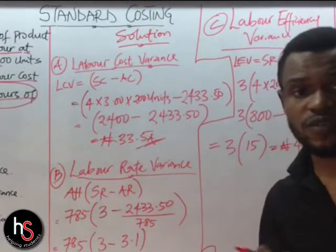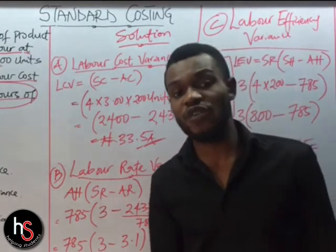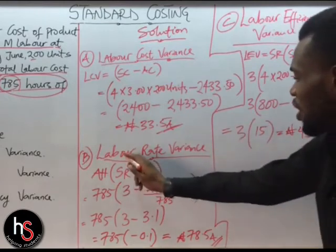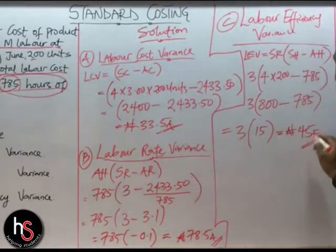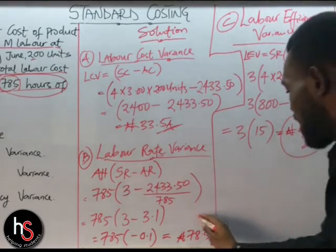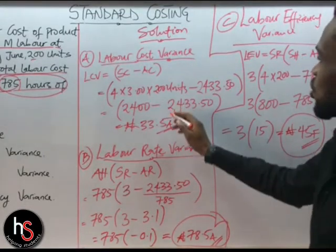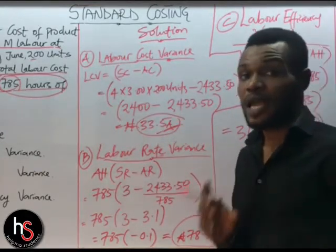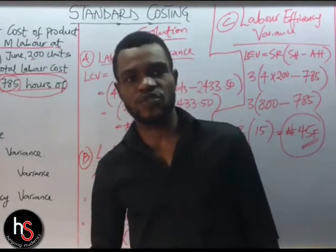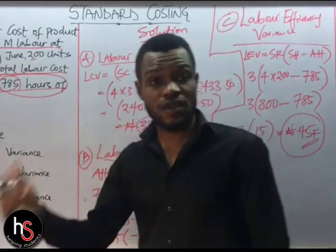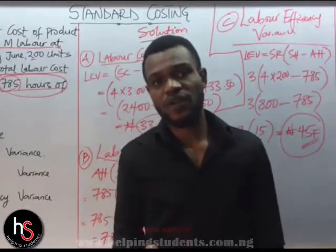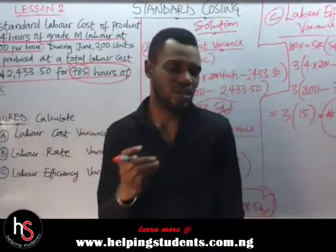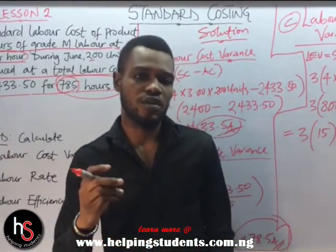Let me tell you something to help you confirm your answers. After solving these questions, your labor rate variance and your labor efficiency variance — when you add them together — must give you the labor cost variance. If they don't give you the same answer, that means you've made a mistake somewhere and you need to recalculate and check your workings. Likewise, on the material variances, your material price variance and material usage variance must add up to the material cost variance.